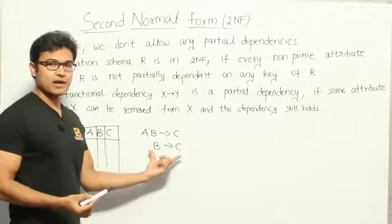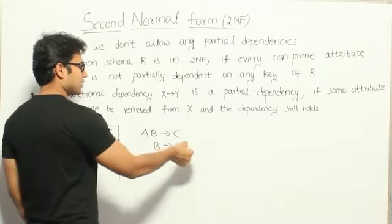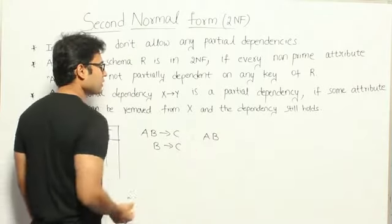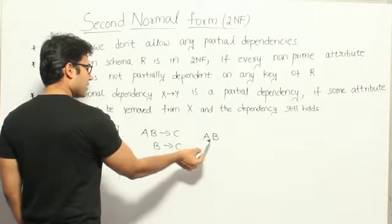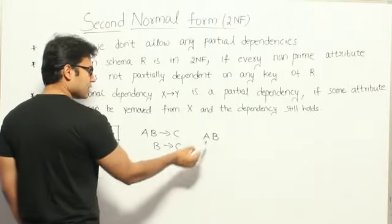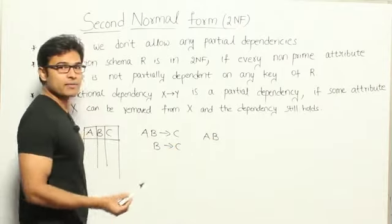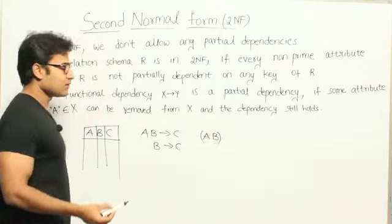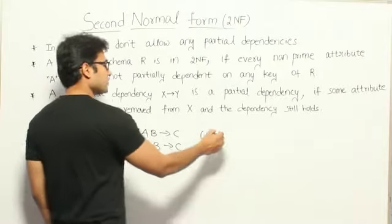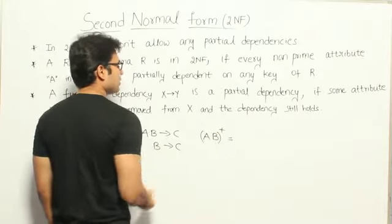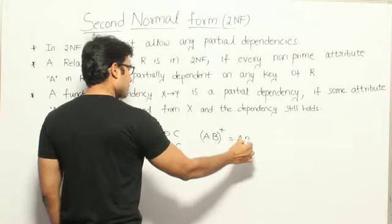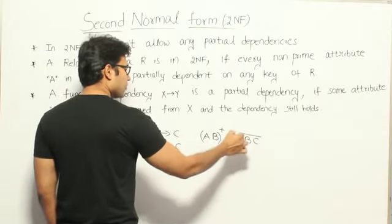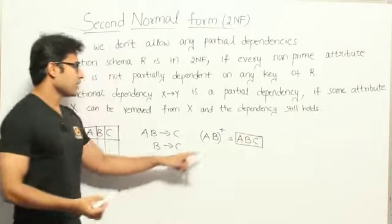First of all, try to find out the candidate key. If you look at the right-hand side, you don't see A and B. Therefore, every candidate key should definitely contain AB because they cannot be determined by any of the functional dependencies. Now let's find out whether AB is sufficient. Finding AB-plus, we can add C, so everything is covered by ABC. Therefore, AB can be a candidate key.